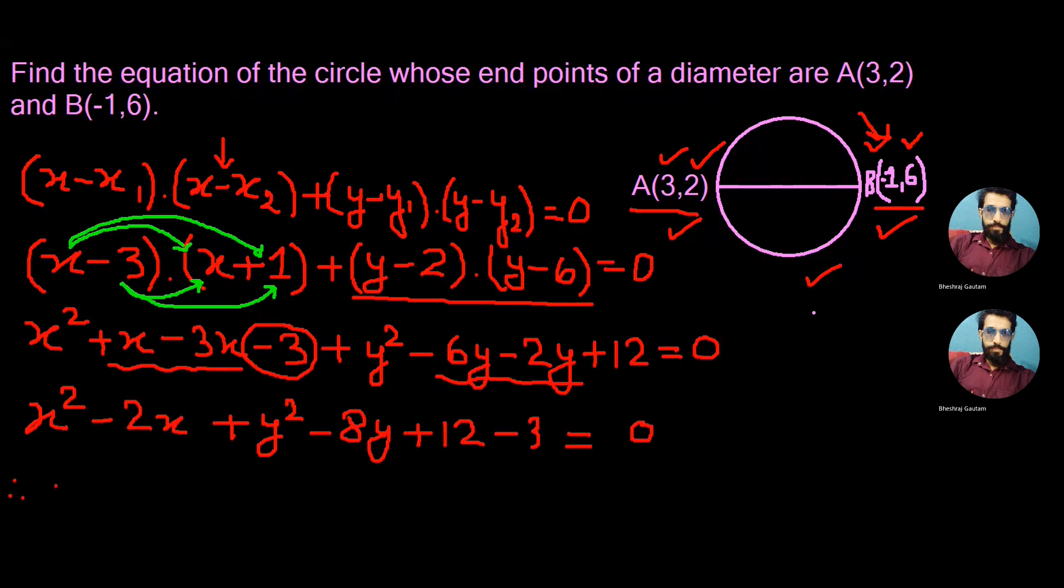Finally, we can write the above equation as x²+y²-2x-8y, and on simplifying plus 12 and -3 we get plus 9 equals 0, which is the required equation of the circle given.